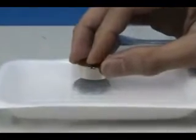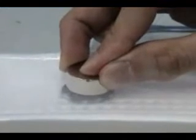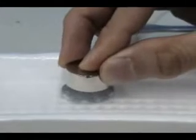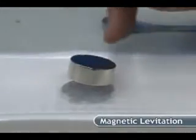Now, the superconductor and the magnet not only repel each other but also attract. This combination of repulsive and attractive forces allows the magnet to stably float above the superconductor. This is known as magnetic levitation.